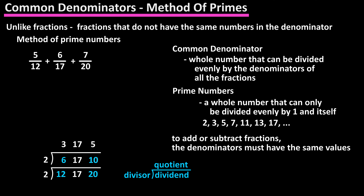Next, we are going to put the quotients of 3, 17, and 5 as the dividends, and again start with the smallest prime number of 2, and see if any of the numbers are evenly divisible by 2. None of the dividends are divisible by 2, so we will try the next prime number of 3, which the first dividend of 3 is evenly divisible. So we will put 3 as the divisor and put the new quotient above the given dividend. 3 divided by 3 equals 1, and for the other two dividends, which are not evenly divisible by 3, we again just bring those up to the quotients.